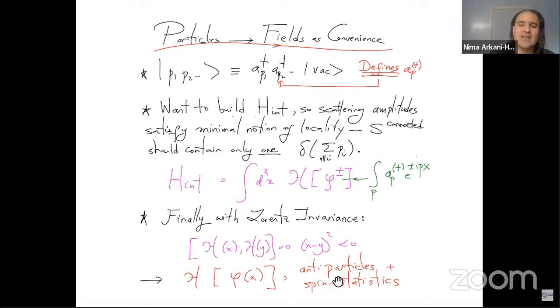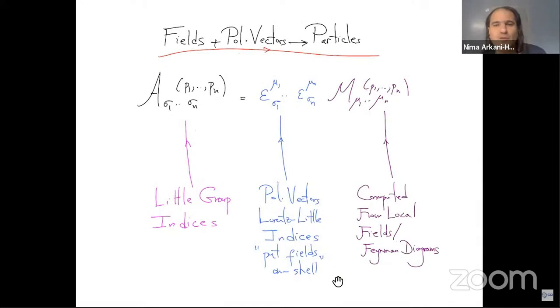All right. So that's the rough logic. We're trying to describe the local interactions of particles and we use fields as a convenient way of doing it. Now, the moment we have particles with spin,